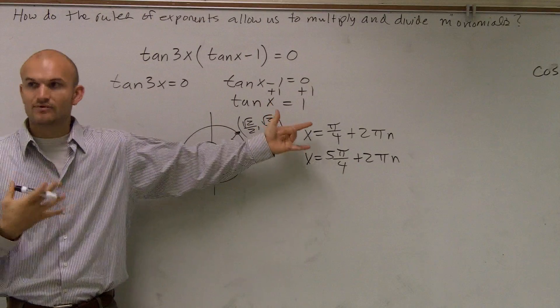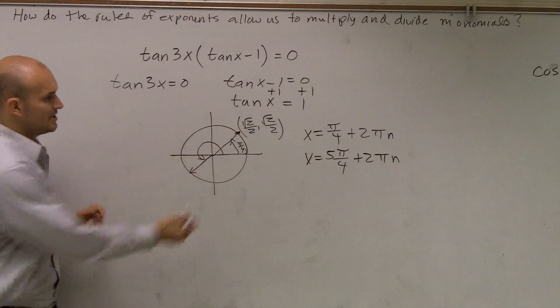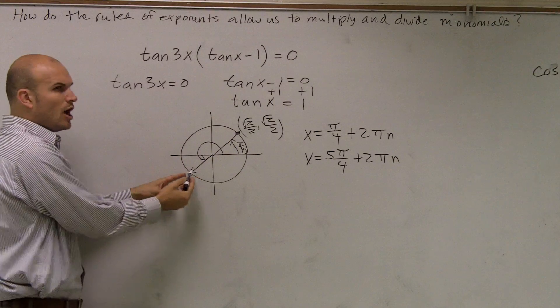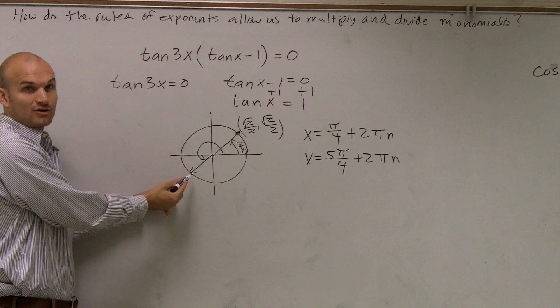Now one thing you guys need to remember though, instead of writing it like this, we can write this a more simplified version. Because to get from this angle, π over 4, to this angle, all I have to do is add π, correct?